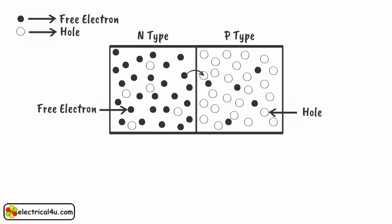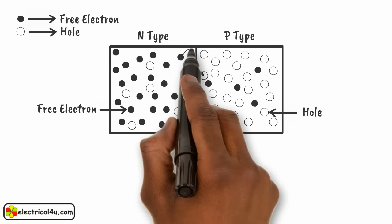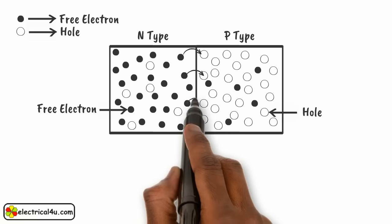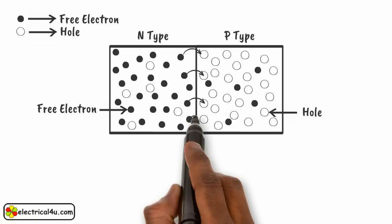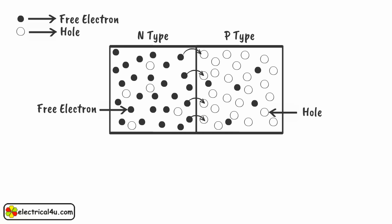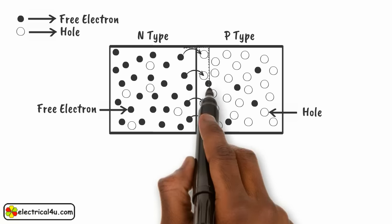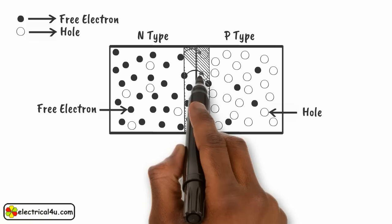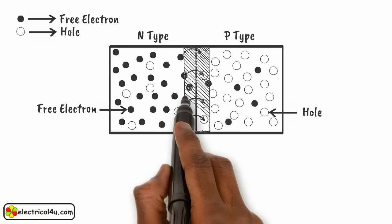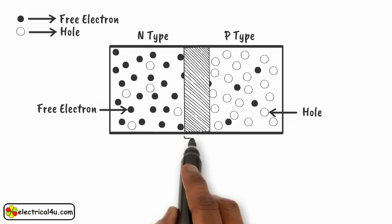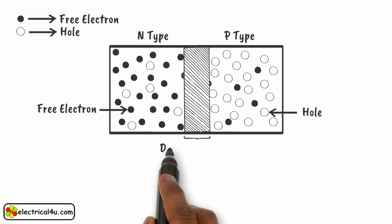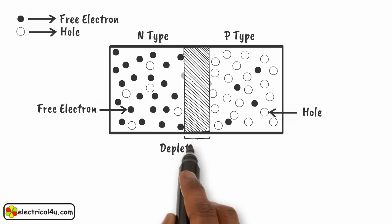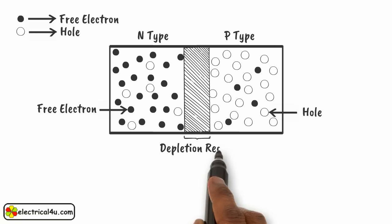Adjacent to the junction edge, free electrons in the N-type material will recombine with holes in the P-type material. As a result, there will be a lack of free electrons and holes across this region. This region is called the depletion region.